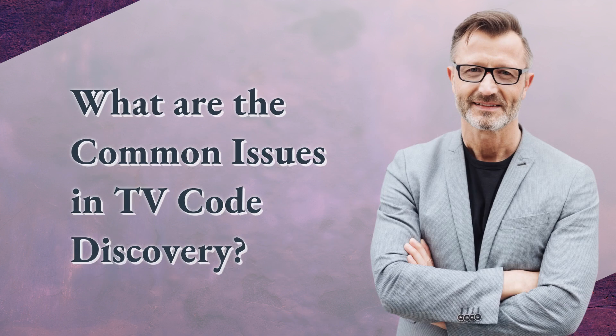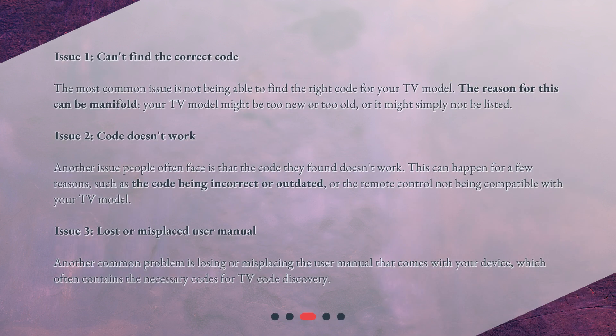Issue 1: Can't find the correct code. The most common issue is not being able to find the right code for your TV model. The reason for this can be manifold — your TV model might be too new or too old, or it might simply not be listed.